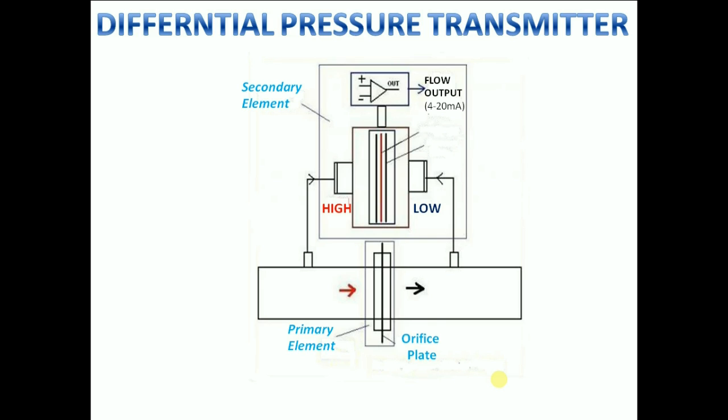The majority of industrial DP transmitters are fitted with diaphragm as the pressure sensing element. This diaphragm is a mechanical device. It is placed in between the two pressure inlet ports. The diaphragm will be deflected by the applied pressure. This deflection is converted into an electrical signal.